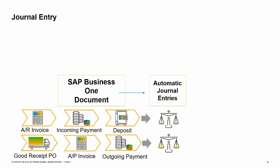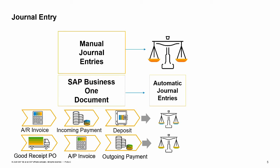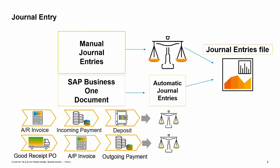In SAP Business One, a journal entry is automatically posted from many documents, such as AR and AP invoices. Additionally, you can manually post a journal entry directly to a GL account or to a business partner sub-ledger account. All journal entries are posted to one file in SAP Business One: the journal entries file.